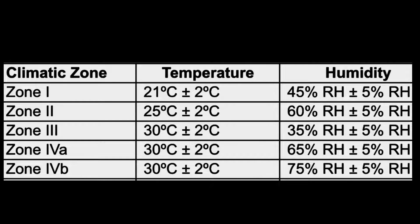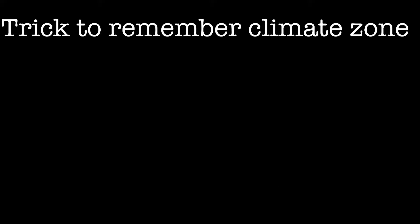For Zone 4a, temperature is 30°C and humidity is 65%. For Zone 4b, temperature is 30°C and humidity is very high at approximately 75%. Now I will tell you a shortcut to remember all these stability climatic zones.